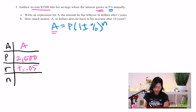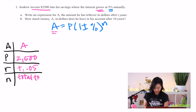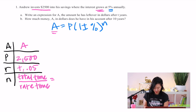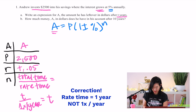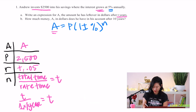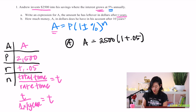For n, the total time is t years and the rate time is annually — once per year — so n equals t over 1, which is just t. Therefore the equation for part a is: a equals 2500 times (1 plus 0.05) to the t, which simplifies to a equals 2500 times (1.05) to the t.